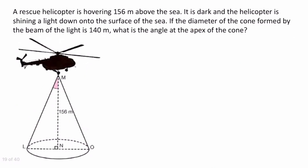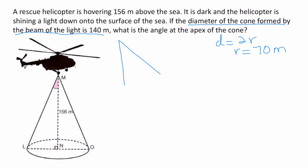Now we get to the third problem. A rescue helicopter is hovering 156 meters above the sea. It's dark and the helicopter is shining a light down onto the surface of the sea. If the diameter of the cone formed by the beam of light is 140 meters, what is the angle at the apex of the cone? Our job is to work with one of the triangles — left or right — to figure out that apex angle. The diameter is 140 meters, and since the diameter is twice the radius, the radius is half of 140, which is 70 meters.